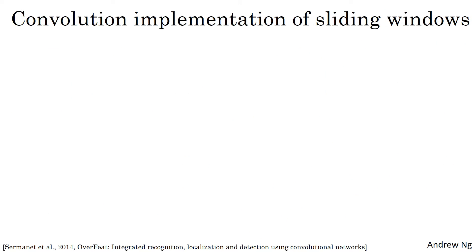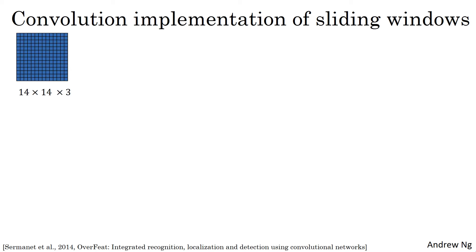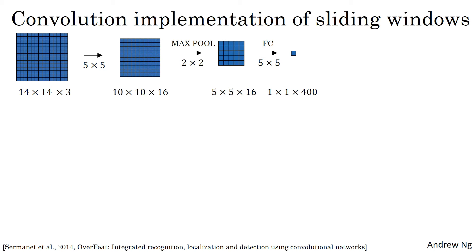Armed with this conversion, let's see how you can have a convolutional implementation of sliding windows object detection. This presentation is based on the OverFeat paper by Pierre Sermanet, David Eigen, Zhang Zhang, Michael Mathieu, Rob Fergus, and Yann LeCun. Let's say your sliding windows ConvNet inputs 14 by 14 by 3 images — again using small numbers to keep the illustrations simpler. The network eventually outputs a 1 by 1 by 4 volume, which is the output of the softmax unit.